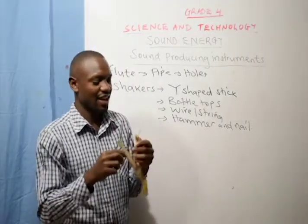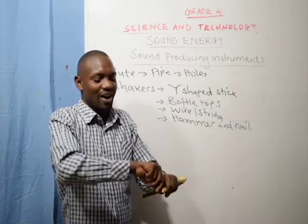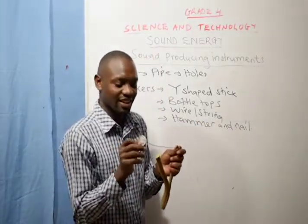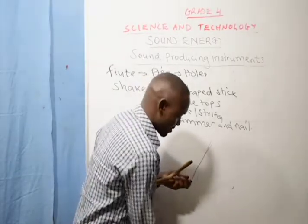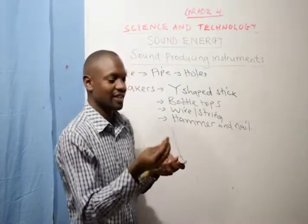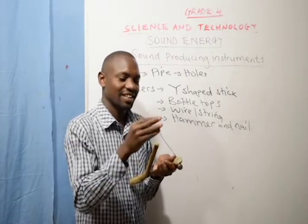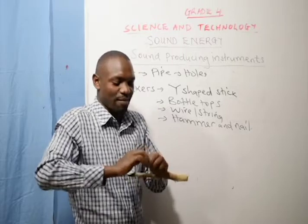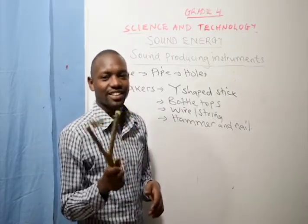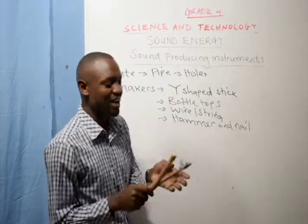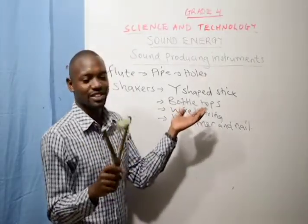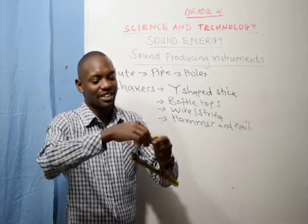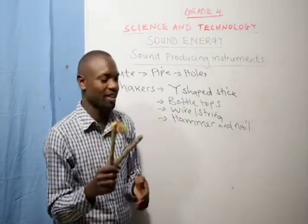Tie one end of the wire onto one side of the stick. Then you arrange the bottle tops on the wire. Just arrange the bottle tops in the wire. Then you tie the other end onto the other part of the stick — and now this is your shaker. You just improvise the shaker using the wire, bottle tops, and a wire-shaped stick. You can use a string instead of wire; tie on one side, arrange the bottle tops, and tie on the other side. Then you just play it through shaking.